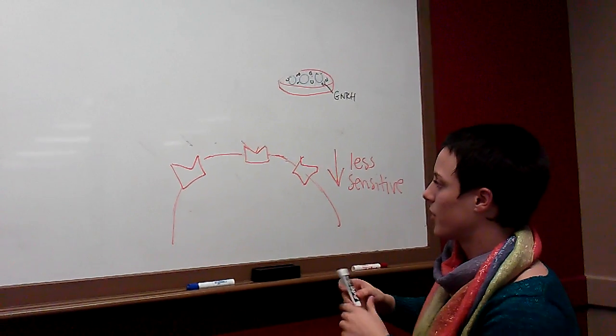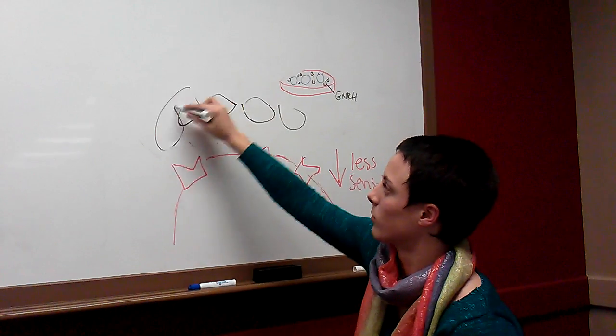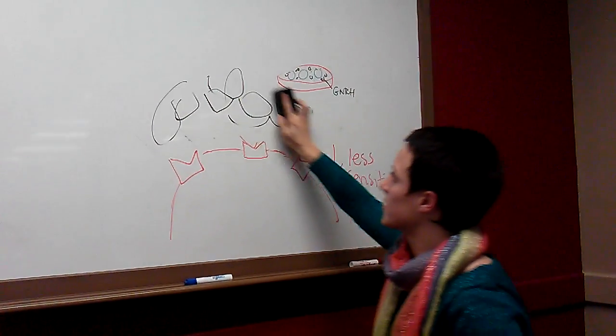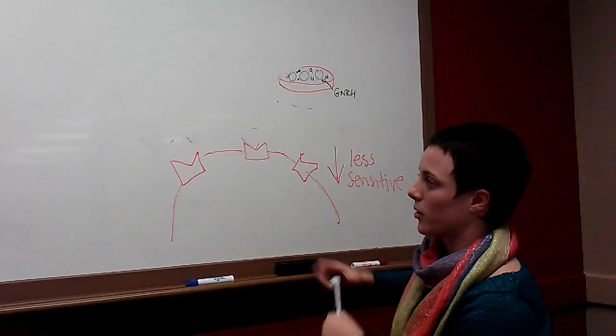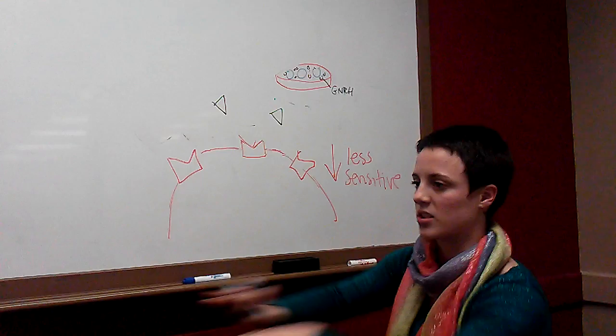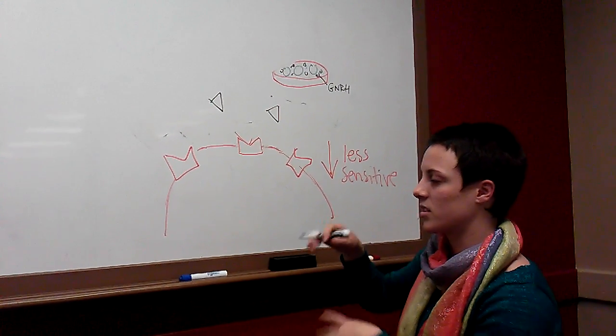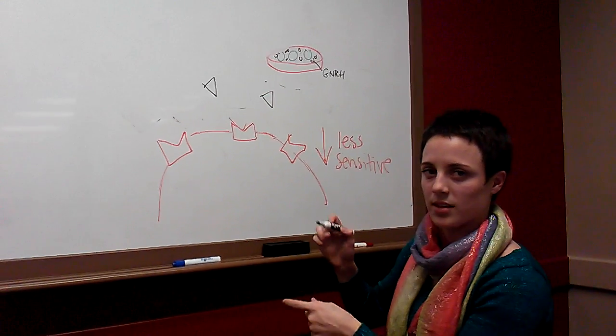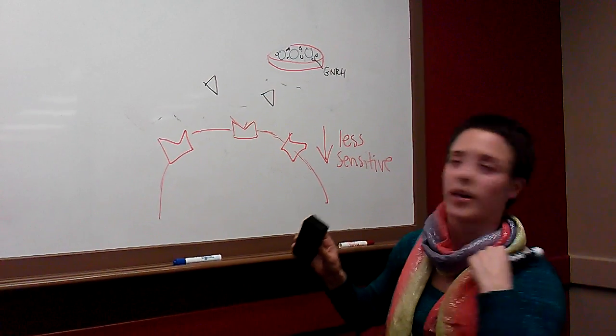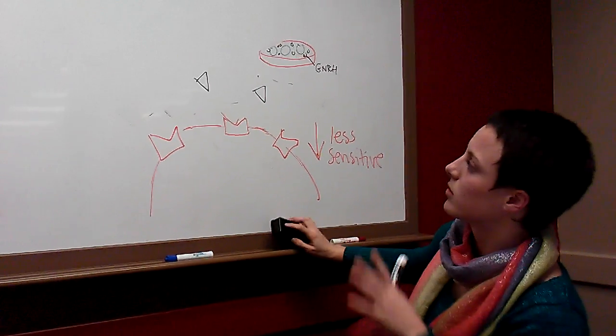In order to prevent that, what the body does, instead of sending out a massive swarm of hormones all at the same time, because then it would desensitize the cell, what it does is it sends short bursts, like short bursts every few hours, instead of a big swarm all at once. They do a short burst every so often so that it doesn't become overly desensitized. Any questions so far? Okay.